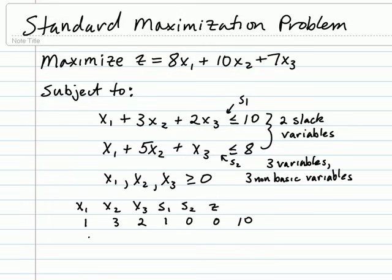The second constraint gives us the coefficients 1, 5, 1 for x₁, x₂, and x₃. There is no s₁ variable, so its coefficient is 0. There will be an s₂ variable with a coefficient of 1, no z variable, and a constant of 8.